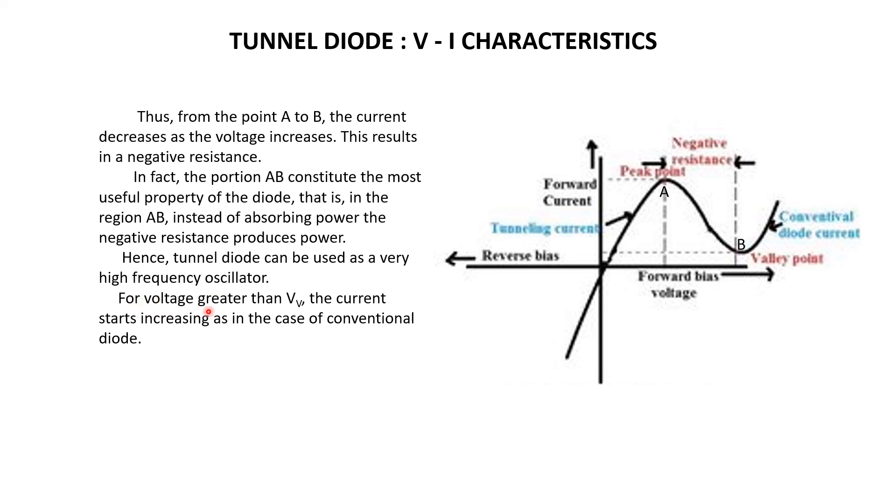For voltage greater than Vv, if you increase the voltage beyond this valley point, then the characteristics are similar to ordinary PN junction diode, that is conventional diode. So this is about the tunnel diode.